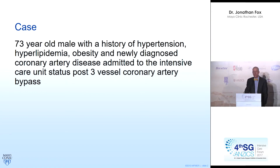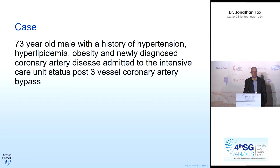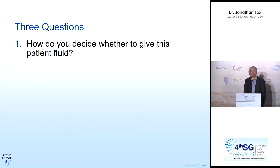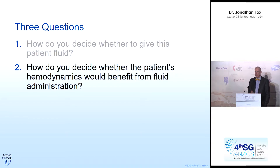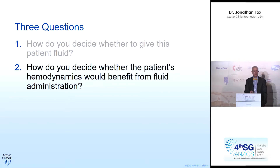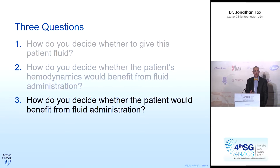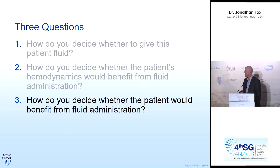The case is a 70-year-old gentleman with standard risk factors who ends up in your ICU after an open three-vessel revascularization. I have three questions. One, on what basis do you decide to give this patient fluid? Two, how do you decide whether fluid is going to improve this patient's hemodynamics—increased stroke volume, increased cardiac output, increased cardiac index? Three, a question we often forget: how do you decide whether fluid is what the patient needs? How do you know whether fluid might benefit not just the patient's hemodynamics, but also the patient him or herself?